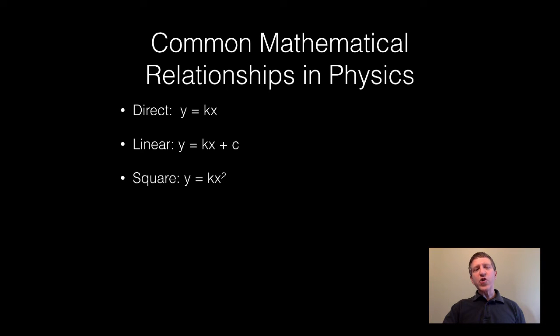We can have a square relationship where y equals kx squared, some constant k times x squared. And here's a case where k will not be the slope, so that's why I'm using the letter k there. It is just some constant. We also have a square root relationship. y can equal some constant k times the square root of x.